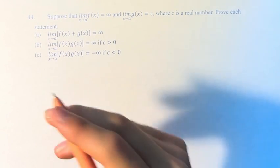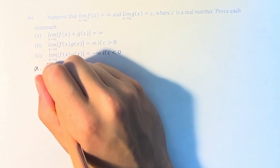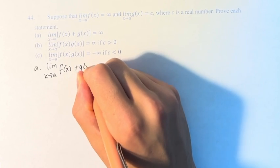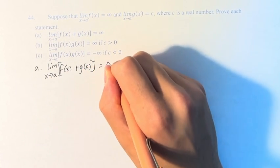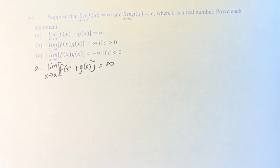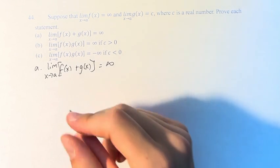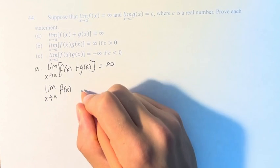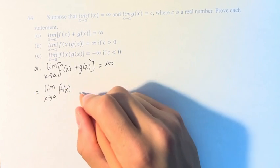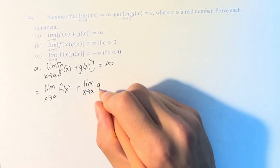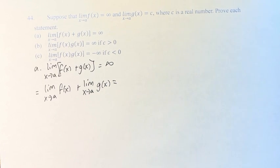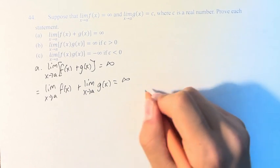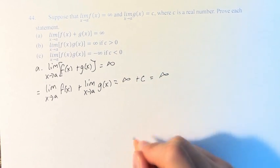In part a, we have that the limit as x approaches a of f of x plus g of x, the limit of this is equal to infinity. We're going to do this using the limit laws, which states that this is equal to the limit as x approaches a of f of x, plus the limit as x approaches a of g of x. The limit as x approaches a of f of x is infinity, the limit as x approaches a of g of x is c, so this is infinity plus c, which is just infinity.